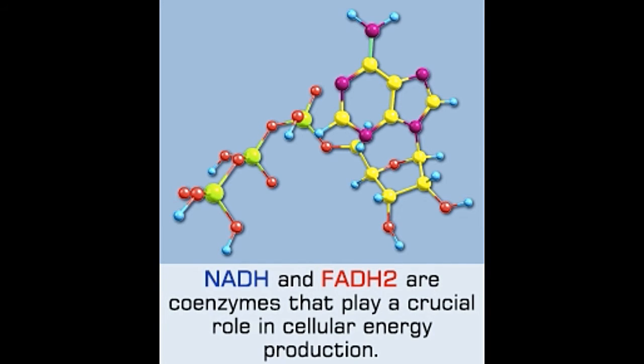Cells of all living organisms need NADH and FADH2, naturally occurring coenzymes for energy production. During cellular respiration, the cells use these coenzymes to turn fuel from food into energy.